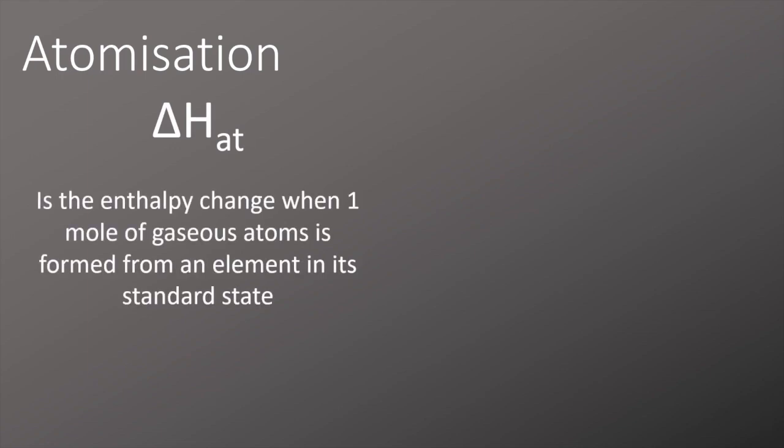When we're talking about atomization, atomization is where we take an element or a compound and we turn it into gaseous atoms. We'll start with delta HAT and define it as the enthalpy change when one mole of gaseous atoms is formed from an element in its standard state. Here we've got half Cl2 becoming a Cl gas—that's one atom in its gaseous state on its own.